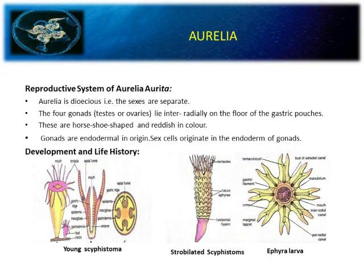The reproductive system of Aurelia: Aurelia is dioecious, meaning both sexes are separated. The four gonads — testes and ovary — lie inter-radially on the floor of the gastric pouches. They are horseshoe-shaped and reddish in color. Gonads are endodermal in origin. Sex cells originate in the endoderm of gonads.